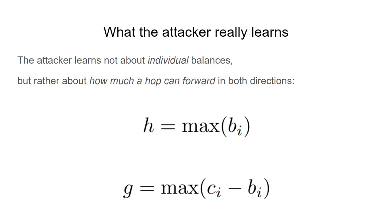H is the maximum of the balances from one side, how much a hop can forward from one side, and G is the analogous metric from the opposite direction.